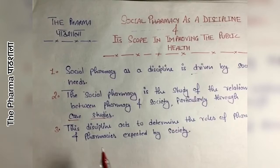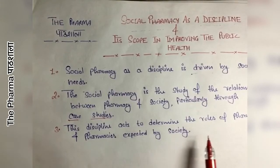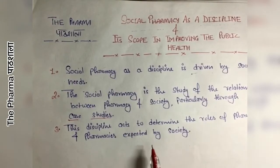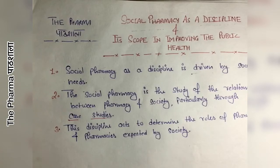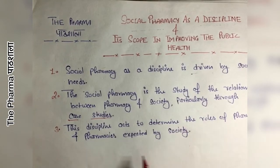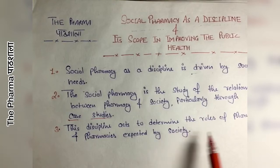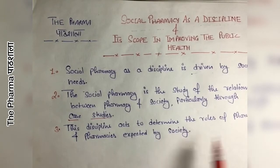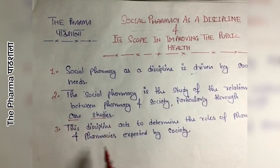The third point is that this discipline acts to determine the roles of pharmacists and pharmacies as expected by society. This discipline determines the role of pharmacists and pharmacies on the basis of society's expectations — what the expectations of pharmacists and pharmacies are, and based on that, we determine their role in social pharmacy.